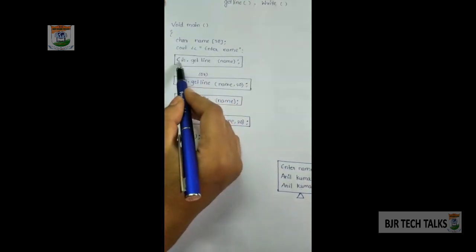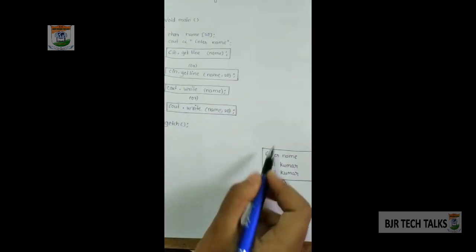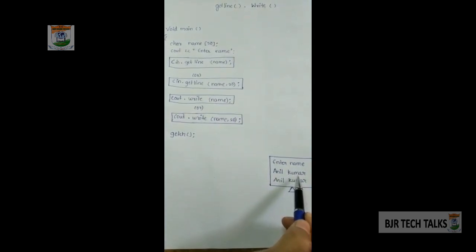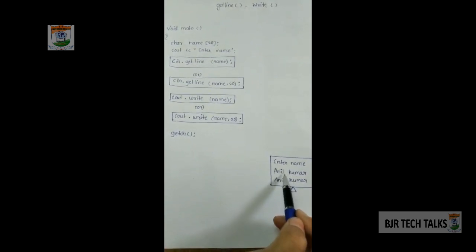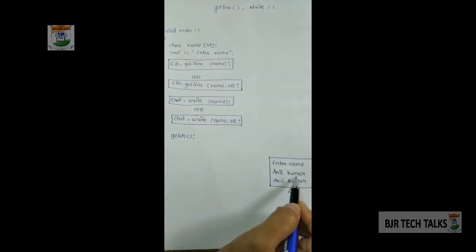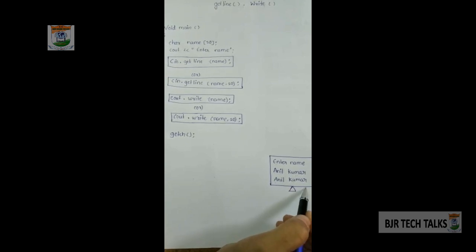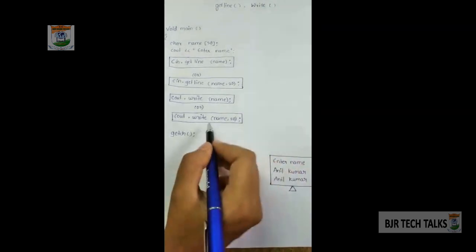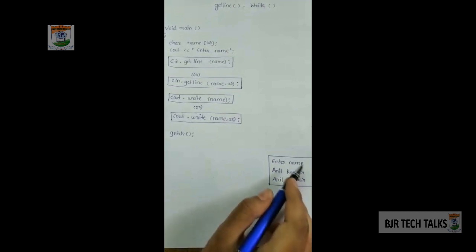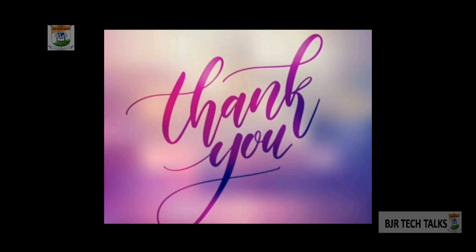The getline function is associated with cin and the write function is associated with cout. When the prompt 'Enter name' is shown, suppose we enter 'Anil Kumar' as the name. This input is read by the getline function as a group of characters. Since the input is 'Anil Kumar', the output will also be 'Anil Kumar', printed by the write function as a group of characters with size 20. This completes the explanation of getline and write functions. Thank you for watching this video from BGR Tech Talks.